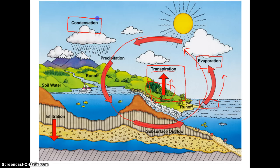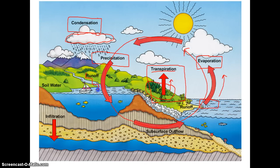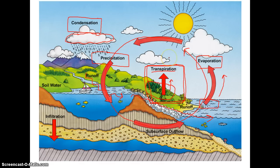We also have condensation, where the gaseous form of water has molecules getting closer together, approaching liquid form again — we see this manifest as clouds in the sky. Then of course precipitation returns liquid water to the planet as rain, snow, sleet, and other forms. That water runs off into reservoirs — rivers, lakes, and streams — eventually reaching large bodies of water like the ocean, where evaporation begins again. The big takeaway is transpiration, which is evaporation from plants.